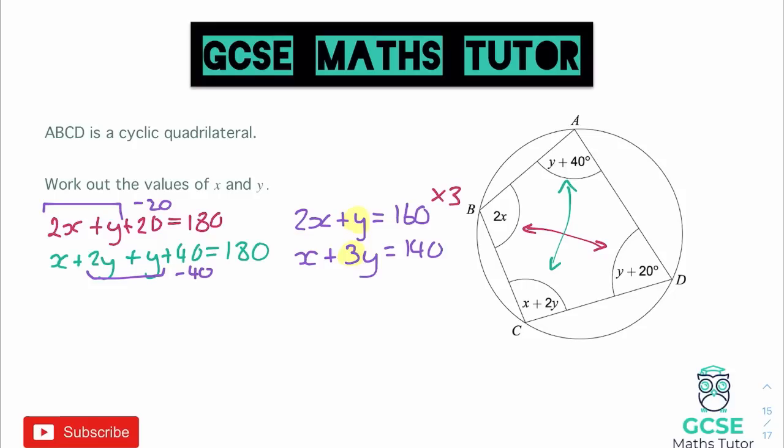So if we multiply that top equation by 3, 2x becomes 6x, then we have 3y, and 160 times 3—and again we are doing this on a calculator—but that is 480. For the next one it stays the same, so x plus 3y is equal to 140. Now our coefficients are the same, we can decide whether to add or subtract. The coefficients of y are both positive, so they have the same signs and therefore we're going to subtract them. 6x take away 1x is 5x, 3y take away 3y is 0, and 480 take away 140 is equal to 340.